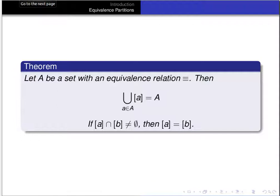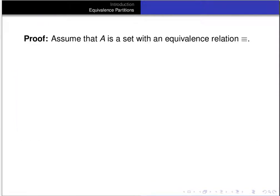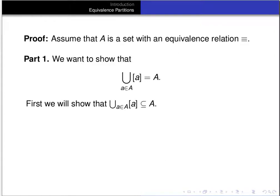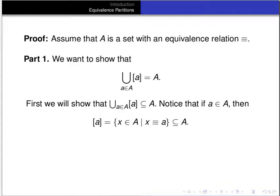Let's prove this theorem. Assume A is a set with an equivalence relation, and we want to show the union of all equivalence classes equals A. First, we'll show the union of equivalence classes is a subset of A. If a is an element of A, then the equivalence class of a — defined as the set of all x in A such that x is equivalent to a — is a subset of the underlying set.